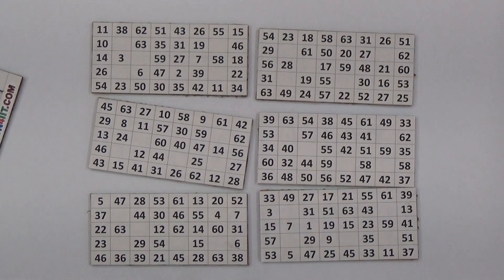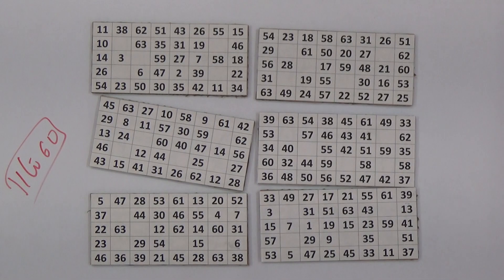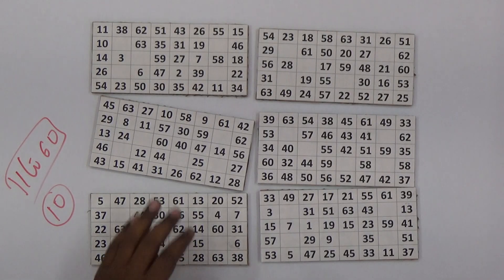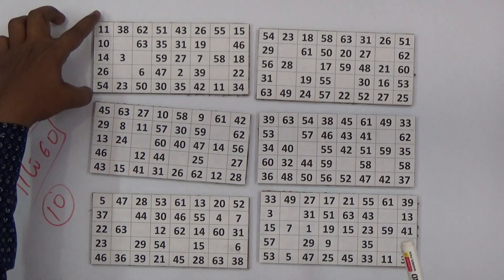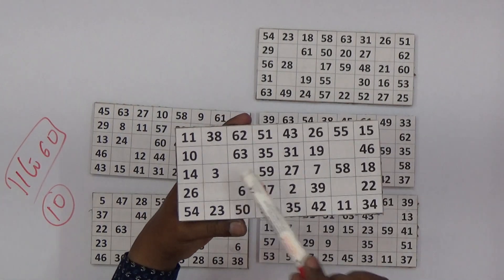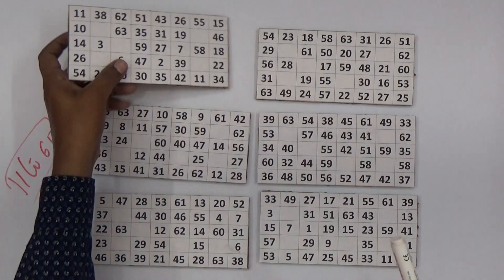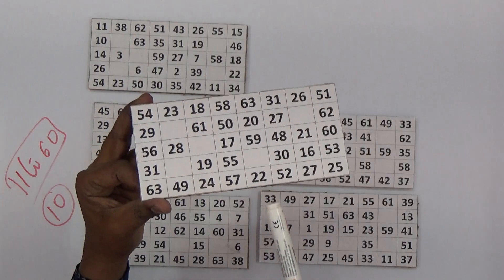From numbers 1 to 60, any number is chosen. For example, I have taken 10. Now let's see in which card number 10 is. This is one card, you need to verify if number 10 is there or not. Yes, in this card number 10 is here.